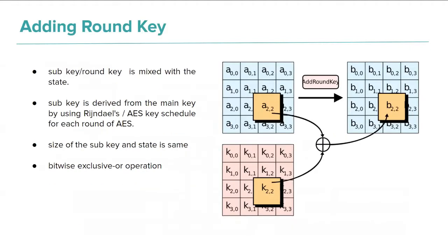In AddRoundKey, round keys generated by the AES key scheduler are added at every stage. We have 10 rounds plus one pre-round, giving 11 rounds total, requiring 176 bits — that is, 11 keys of 16 states each. For each stage, the input state is XORed with the corresponding round key matrix, since addition in Galois field arithmetic corresponds to XOR.